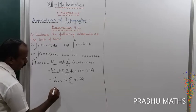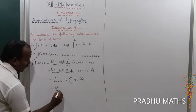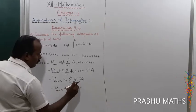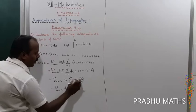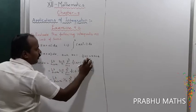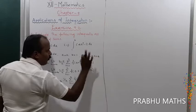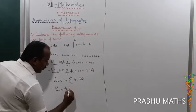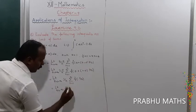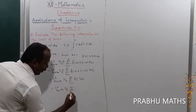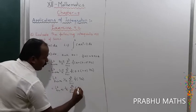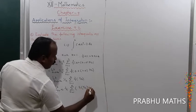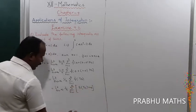So this equals limit as n tends to infinity of 1 by n, times summation of r from 1 to n of f(r by n). Substituting f(x) = 5x + 4, we replace x with r by n: f(r by n) equals 5 times (r by n) plus 4. So the summation becomes summation of r from 1 to n of [5(r/n) + 4].